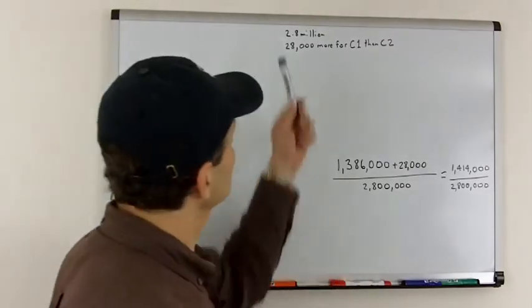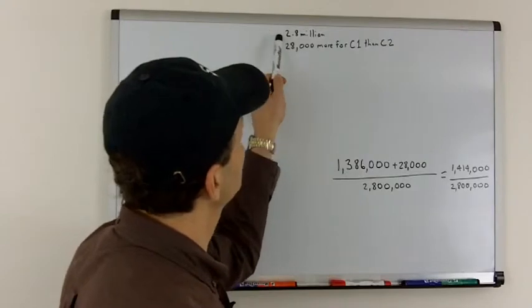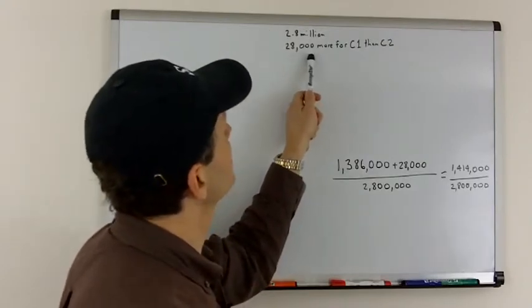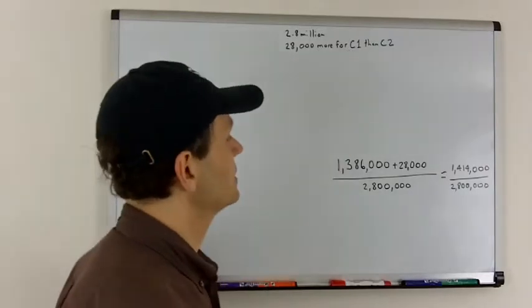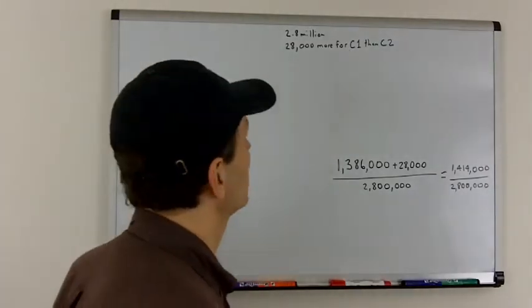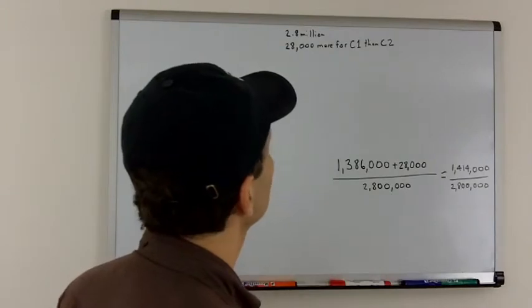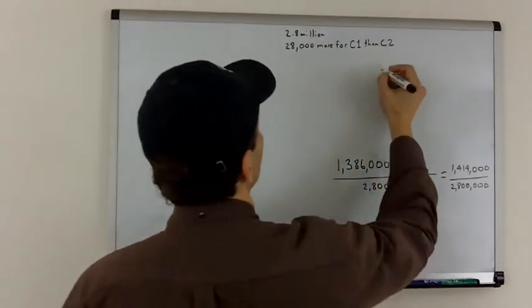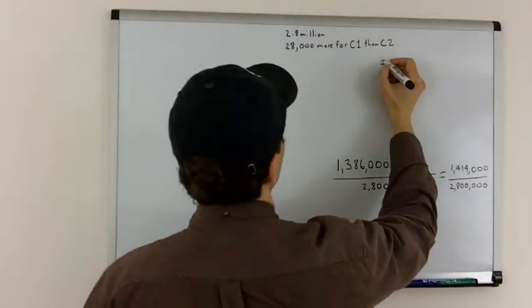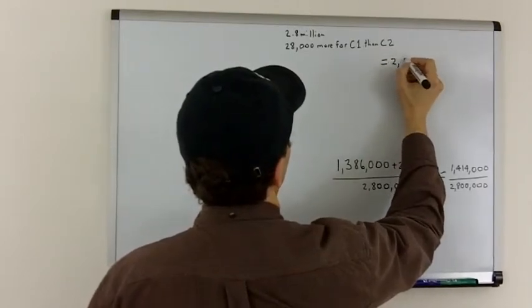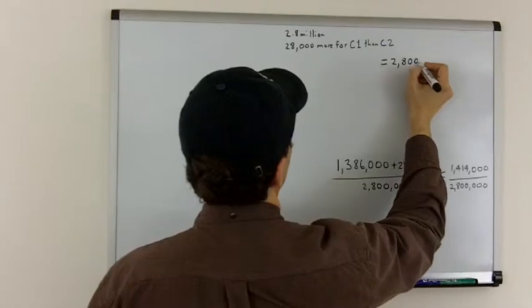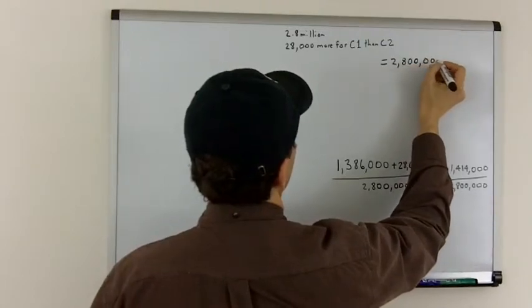So, let's start with the information. 2.8 million votes were cast. 28,000 more were cast for Candidate 1 than Candidate 2. So, we know that the total is going to be equal to 2.8 million, which is 2,800,000.